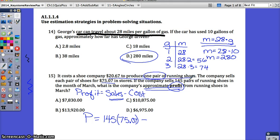It cost them $20.67 to produce one pair of running shoes. How many did they sell? 145. How many did they produce? 145. So we're going to be taking away 145 times the $20.67. We're taking away that cost.